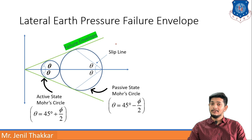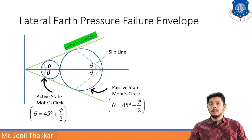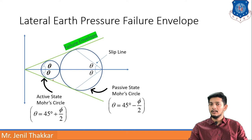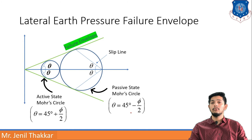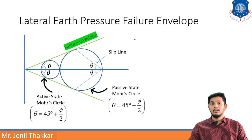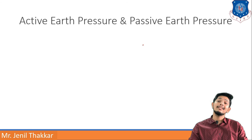Let us understand active and passive earth pressure with Mohr's circle of stress and the failure envelope. The first circle shows the active state and the second shows the passive state. The slip line tangential to the circle going to the failure envelope is at angle 45 minus φ/2 for the passive state and 45 plus φ/2 for the active state. So active earth pressure failure always occurs at 45 + φ/2 and passive at 45 − φ/2.